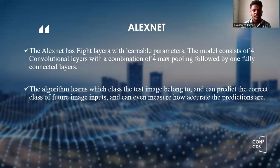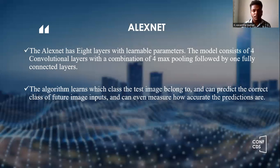AlexNet architecture. The AlexNet has eight layers with learnable parameters. The model consists of four convolutional layers and a combination of four max pooling layers followed by one fully connected layer. The algorithm learns which class the test image belongs to and can predict the correct class of future image inputs and can even measure how accurate the predictions are.